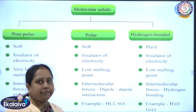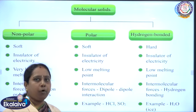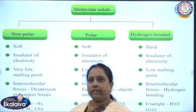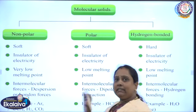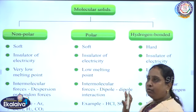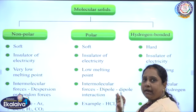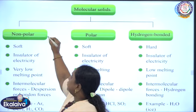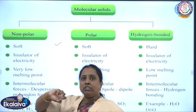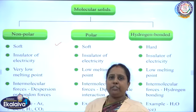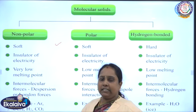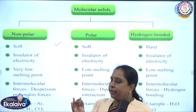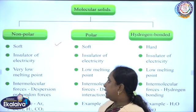There are three different types of molecular solids: polar molecular solids, non-polar molecular solids, and hydrogen bonded molecular solids. Let us have a comparative study. The first type is non-polar, which means the polarity is not shown by these crystalline solids — oppositely charged particles are not produced.